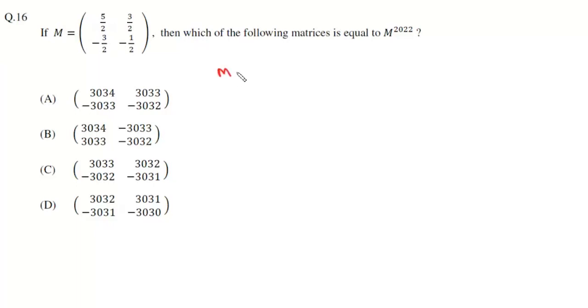So what we'll do is we'll write this M as 3/2, 3/2, minus 3/2, minus 3/2, plus 1 0 0 1. Now if we add it we'll get minus 1/2 and here will be 5/2. So suppose this matrix is A, so we can write this M as A plus I.